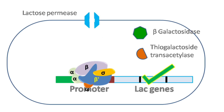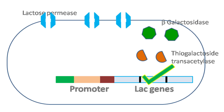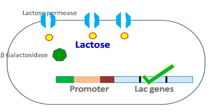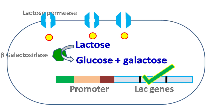As the lac genes are continuously transcribed, more lactose permease, beta-galactosidase, and thiogalactoside transacetylase enzymes are formed. Lactose permease further allows more lactose to enter the cell. The lactose that enters the cell is hydrolyzed to glucose and galactose by beta-galactosidase enzyme, and glucose and galactose are used as an energy source.